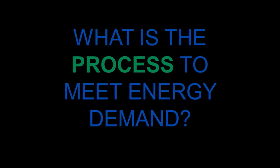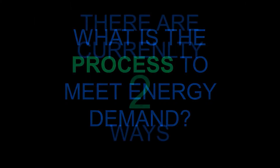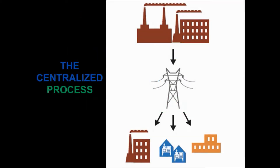So how do we meet this demand? There are currently two ways: centralized and distributed. Let's begin with the centralized process. Centralized refers to energy that is collected and then all brought to one central location and then sent back out.